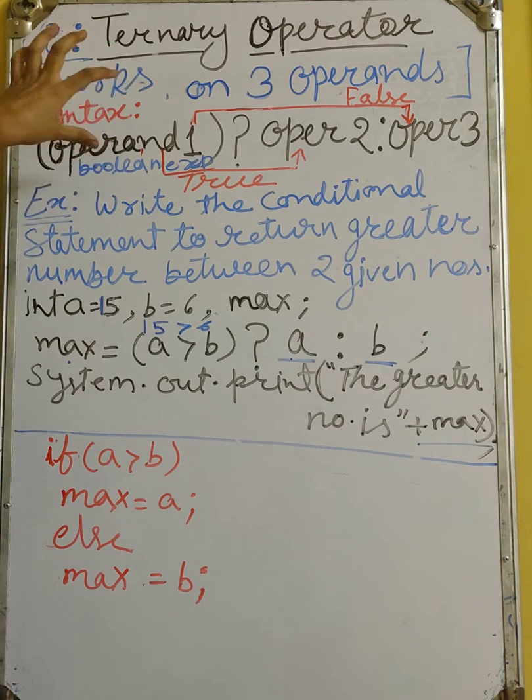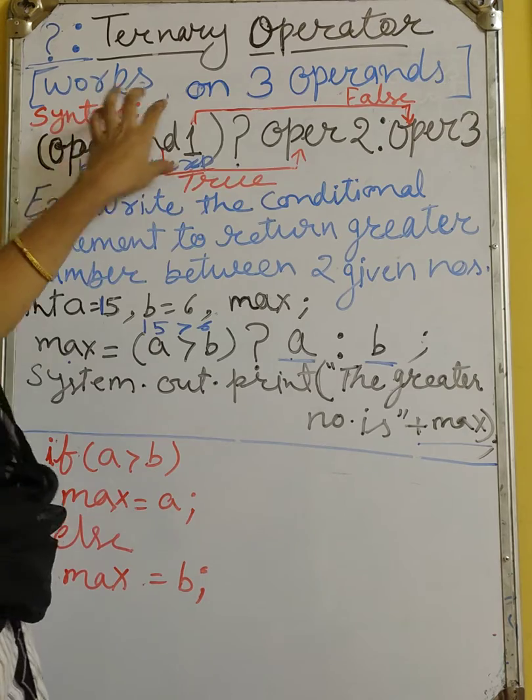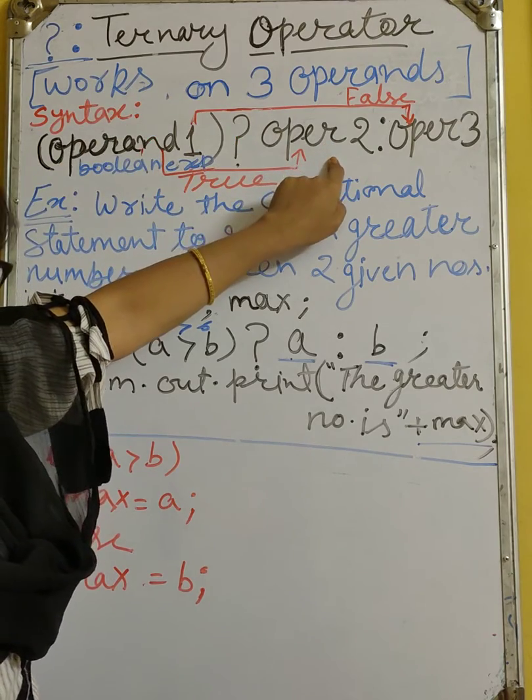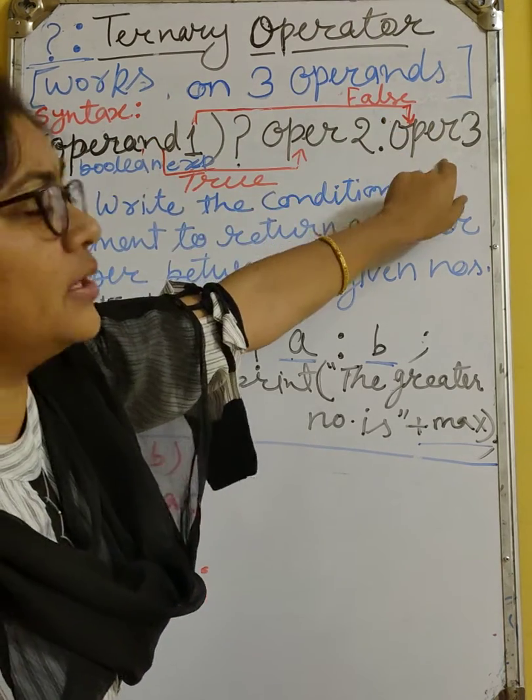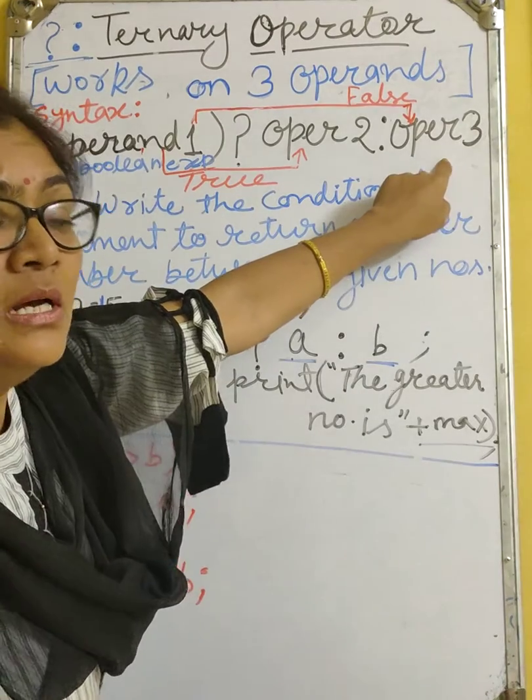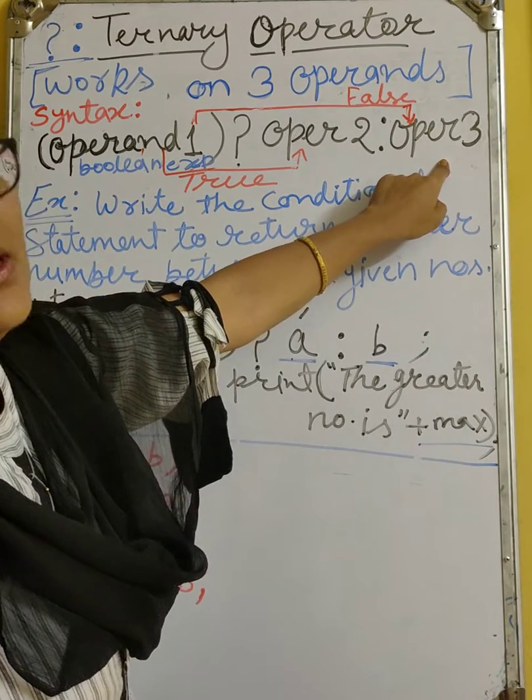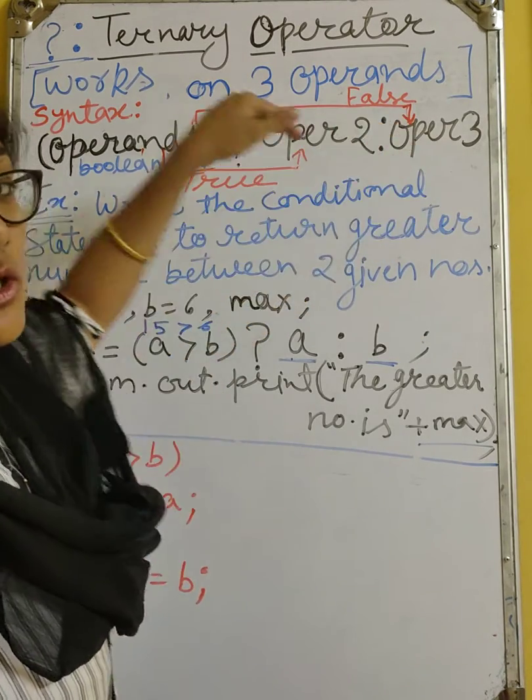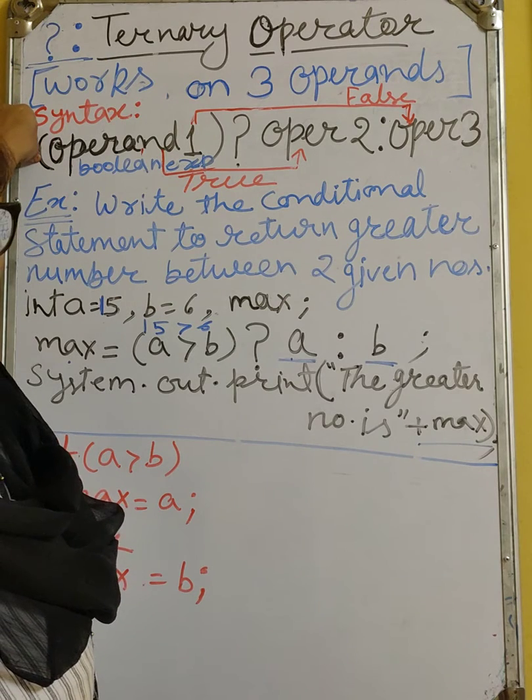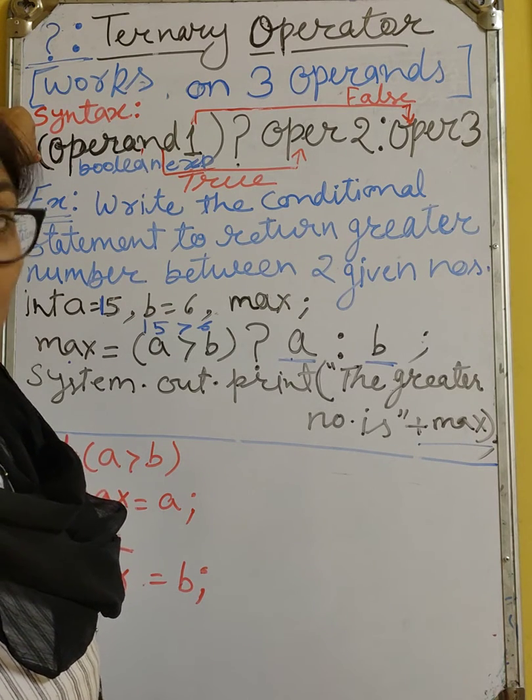If this boolean expression is going to return true, then this operand 2 will be evaluated, otherwise operand 3 will be evaluated. See, it works on the if-else concept only. Because this is also a conditional statement like the if-else.